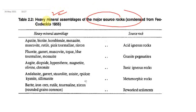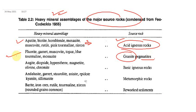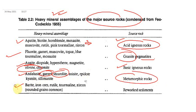The heavy mineral assemblage of a source rock can tell us what the source rock was. If minerals like apatite, biotite, and hornblende are found in a sandstone, the source rock was acidic igneous rock such as rhyolite or granite. If fluorite, garnet, and muscovite are present, the source was granite or pegmatite. If augite and olivine are present, it indicates basic igneous rock. If andalusite, garnet, and staurolite are found, the source was metamorphic rock. If biotite and iron ores with rutile are present, these are reworked sediments.